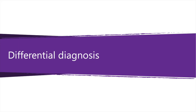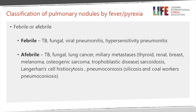Perhaps the first way to classify pulmonary nodules is by whether the patient has a fever. If there's a fever, the typical infections are tuberculous, fungal, viral, but hypersensitivity pneumonitis in the acute phase may also cause small nodules and pyrexia. If the person is afebrile, this doesn't exclude TB or fungal disease, but tumour is perhaps slightly more likely, and tiny nodules as seen with thyroid, renal, breast, and osteogenic sarcoma are particularly classical.